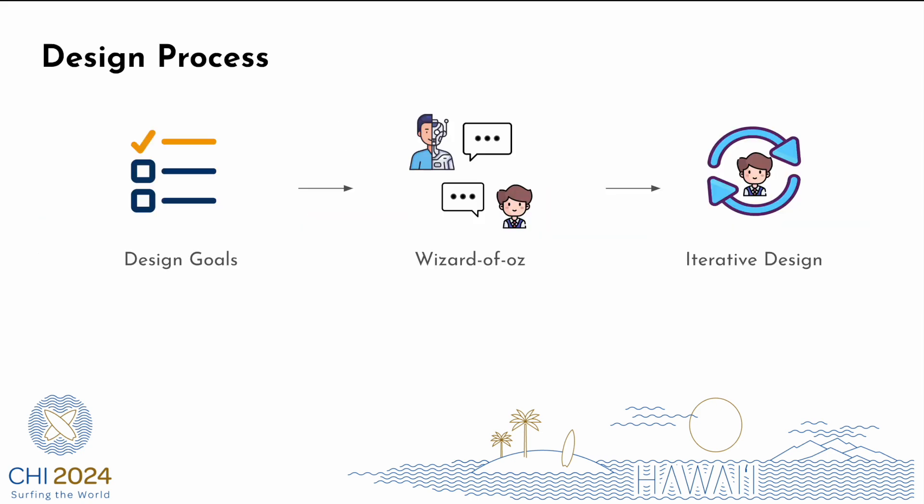Our platform was designed through an iterative design process by setting initial design goals from prior work, conducting a Wizard of Oz study with undergraduates to capture preferred chatbot behaviors, and iterative design with users for effectiveness. Through this process, we established three design goals: managing stage transitions, enhancing inclusivity, and facilitating knowledge construction.